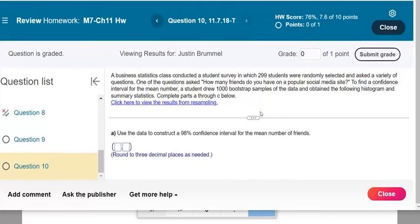Okay, question 10. Business class contains 299 students. How many friends do you have in a popular media site? 1,000 bootstrap samples of the data and obtain the following histogram.